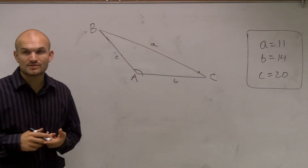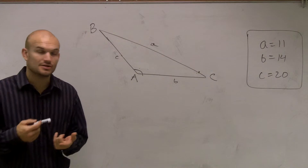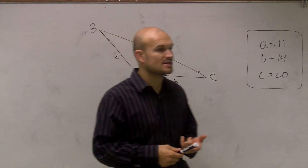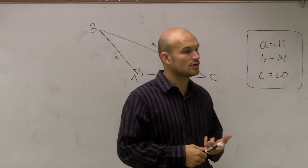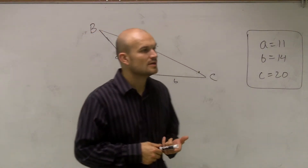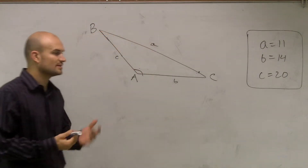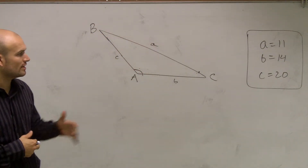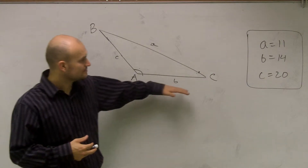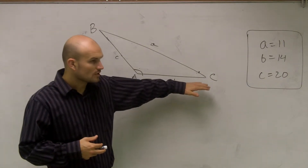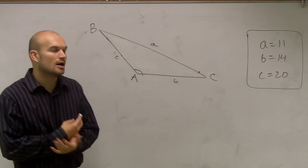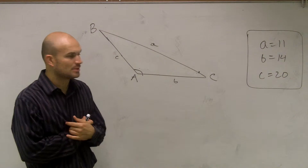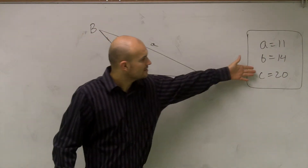And remember, there are three different formulas for the law of cosines. We can solve for the cosine of A, the cosine of B, or the cosine of C. When using the law of cosines, a helpful hint is to solve for the angle that is directly across from your largest side length.